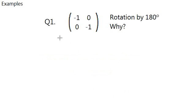So last time on Chapter 9.4, I said that negative 1, 0, 0, negative 1 is rotation at center by 180 degrees, but why is that?